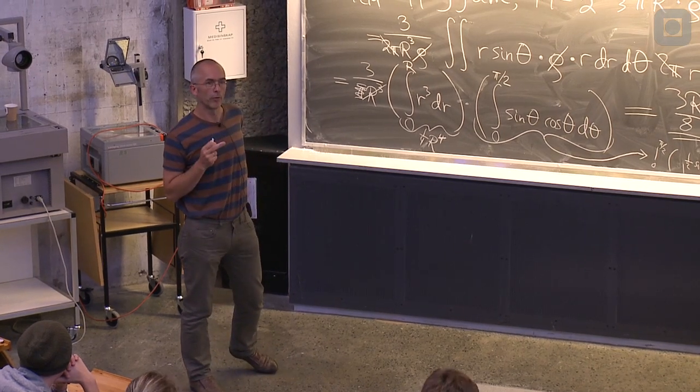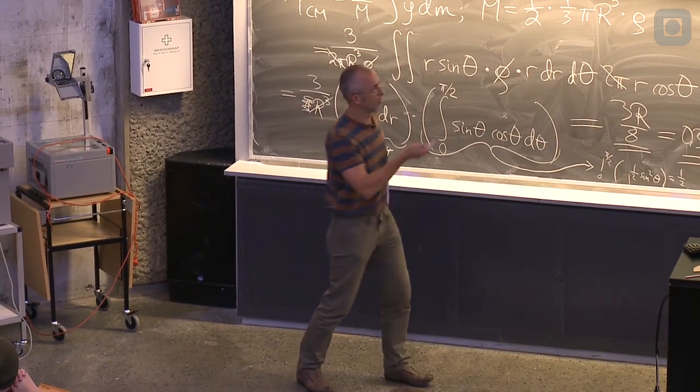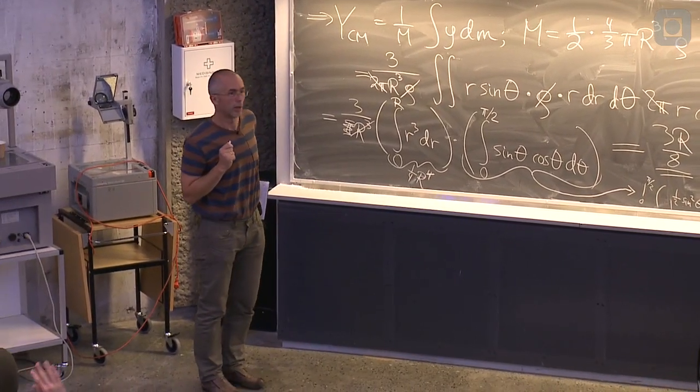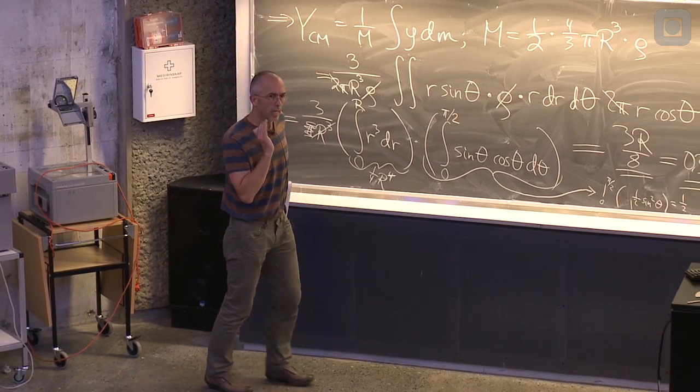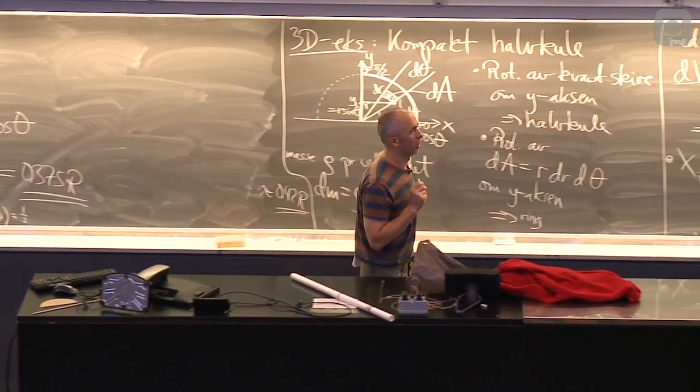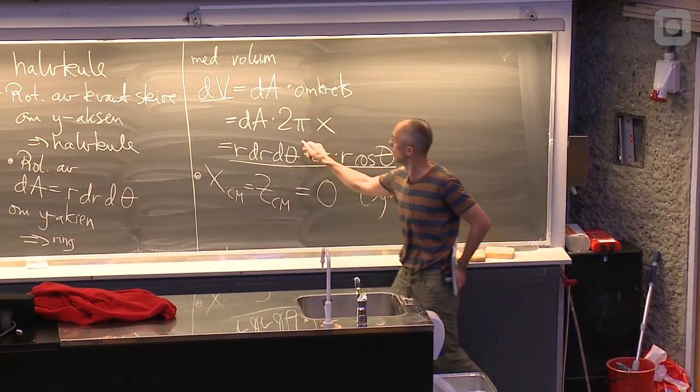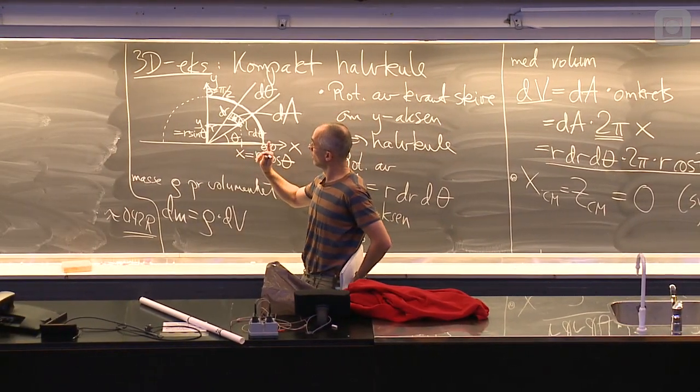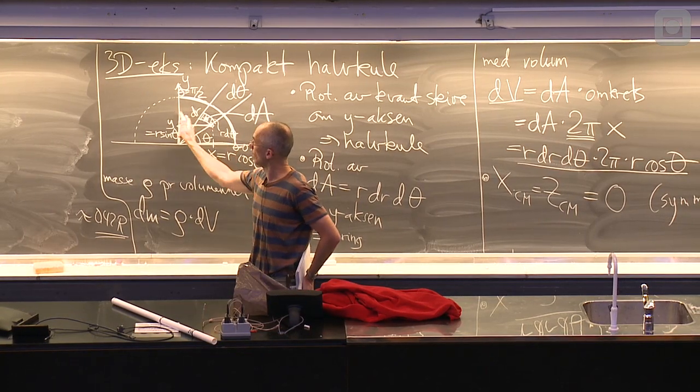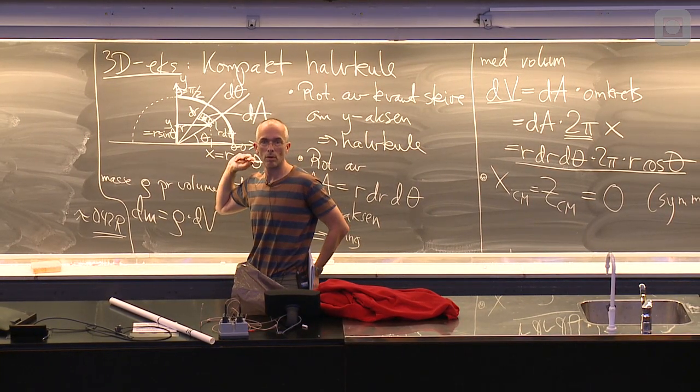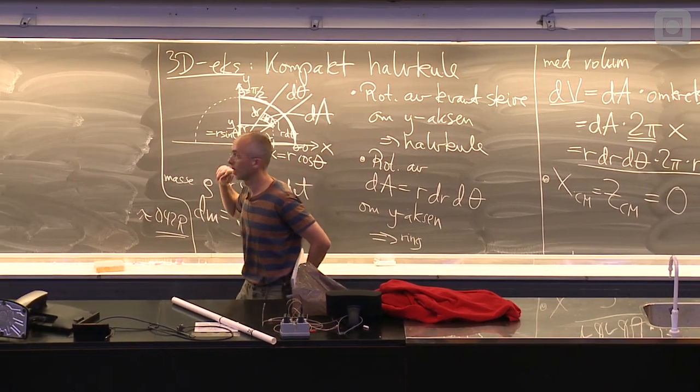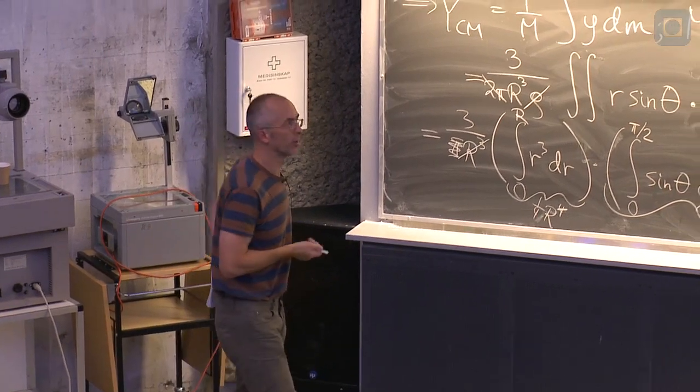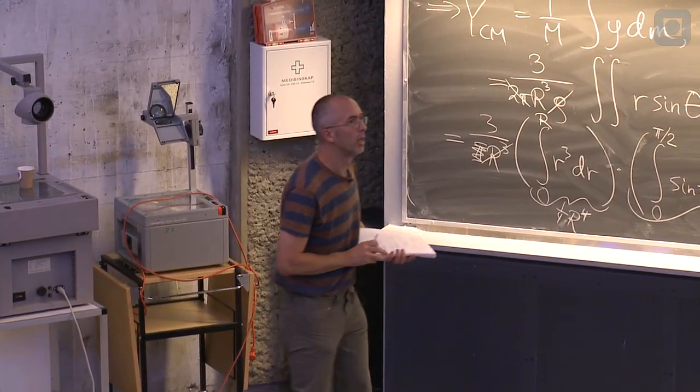Her kunne vi jo i utgangspunktet ha tenkt oss at, når vi skulle ha et tredimensjonalt eksempel, og et volymelement i tre dimensjoner, at vi ville endte opp med et trippel integral, det vil si integrasjon over tre variabler. Det har vi egentlig gjort, men vi gjorde den ene integrasjonen uten å legge særlig merke til den. For den faktoren to pi der, det er jo egentlig fordi vi har integrert en vinkel, la oss kalle den for fi da, ved å spassere en runde rundt y-aksen. Så det er den tredje variabelen her som ikke dukket opp, fordi at vi innså uten videre, og det gjør vi gjerne, at omkretsen av en sirkel er to pi ganger radius.